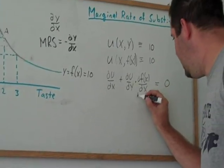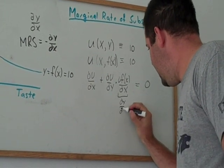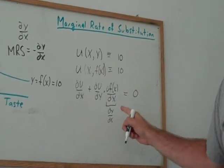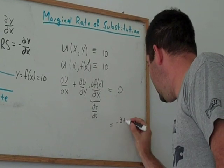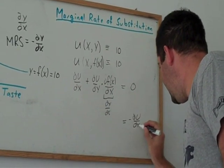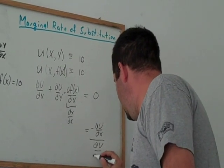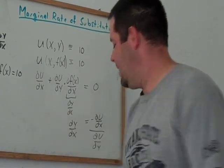And we can look at this, that's going to be our dy/dx. Notice we take the negative of dU/dx, we can divide by dU/dy, and that will equal dy/dx.